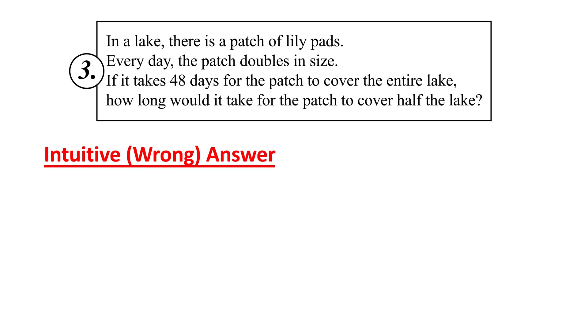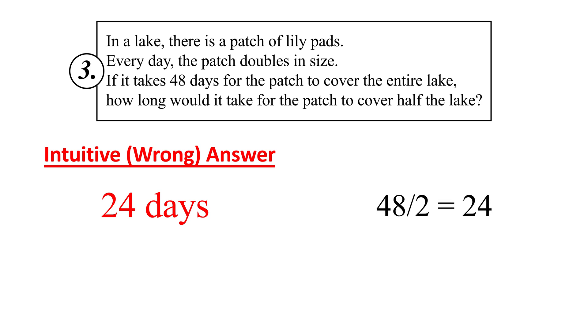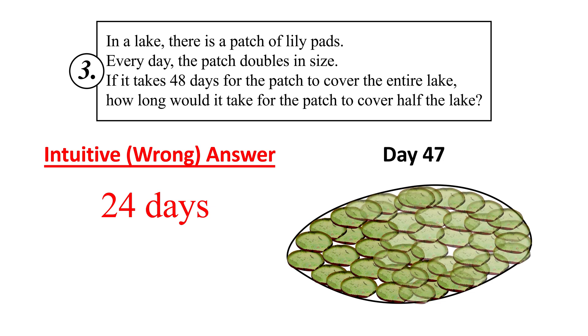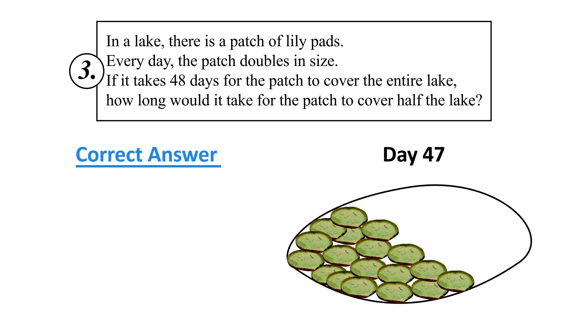For question two, a lot of people say 100 minutes, but the answer is just five minutes. Since we have the same ratio in terms of machines and outputs, the time will be the same. From the given information, it takes one machine five minutes to make one widget, so it will take 100 machines five minutes to make 100 widgets. For question three, the intuitively wrong answer is 24 days. But that isn't right because the coverage of the lily pads is doubling every day, so starting from 48 days when it's completely covered, we just go back one day to 47 for when the lily pads cover half the pond.